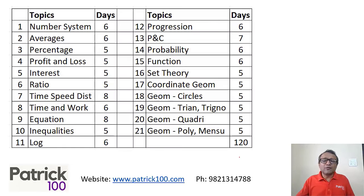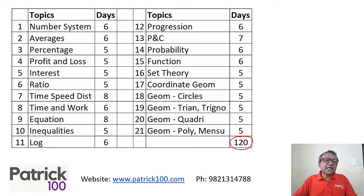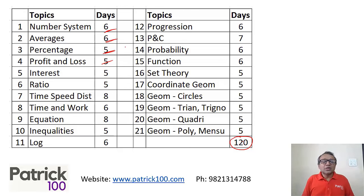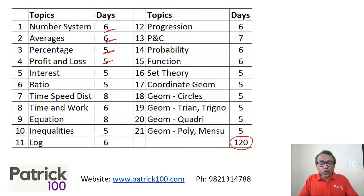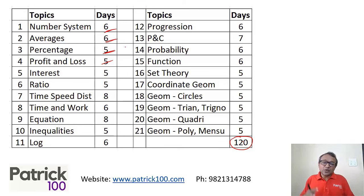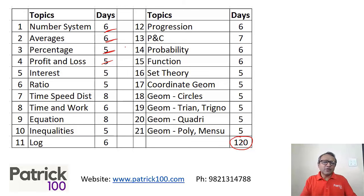Here's a rough idea for 120 days — four months of planning. You can spend six days on number systems, six days on averages, five days on percentages, five days on profit and loss. In these days, solve as many sums as possible to get a hang of it and practice. The idea is don't try to go with tougher sums — go with basic fundamental, easy-level sums so that you know the topic. Practice based on whatever level you are. You can go to a higher level in January when you start with the proper syllabus. Right now focus on level-one sums. This gives a rough idea of what topics you need to cover for CAT.